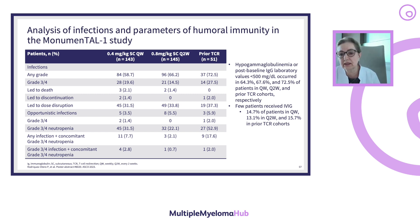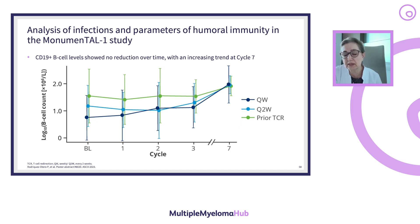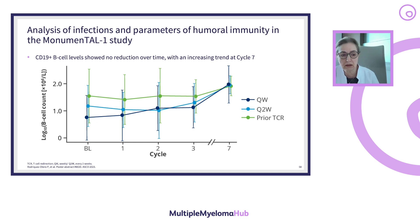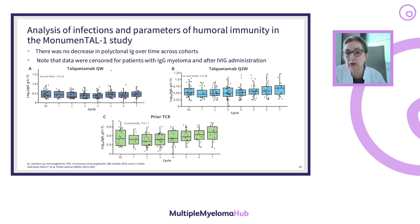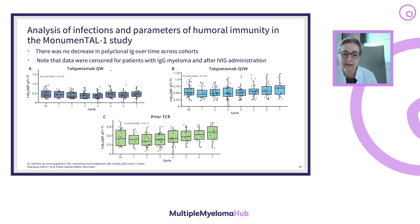In the next slide, there is a graph showing CD19-positive B cells, which reflects the decrease in infectious morbidity correlating with less toxicity. And in the MonumenTAL-1 data on the anti-GPRC5D platform, changes in polyclonal immunoglobulin levels — corrected for myeloma type and IV immunoglobulin administration — show that with weekly dosing, IgG levels are lower compared to patients receiving treatment every two weeks.